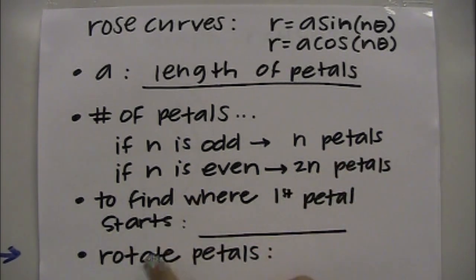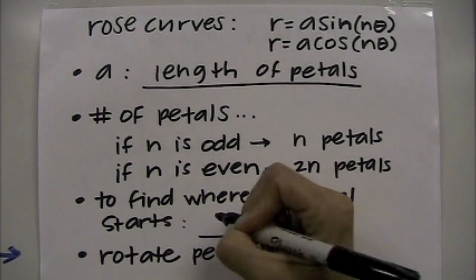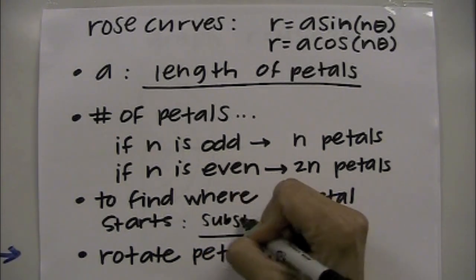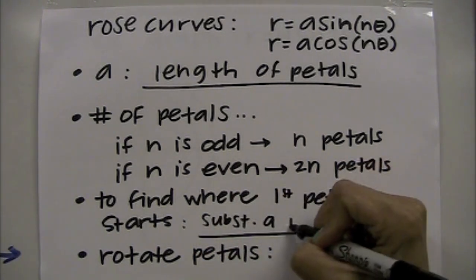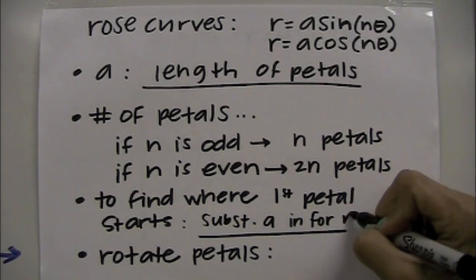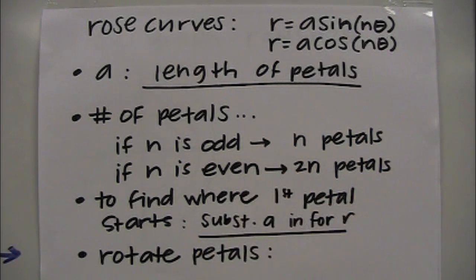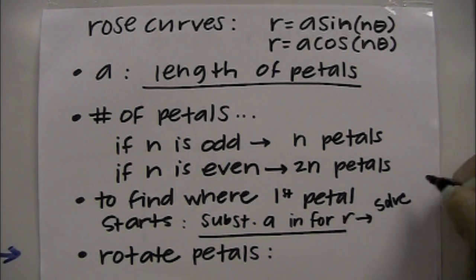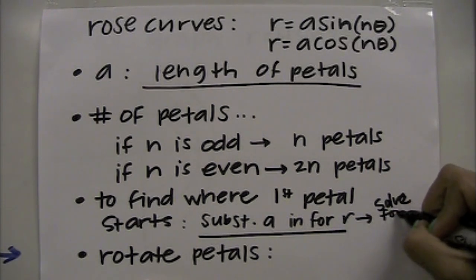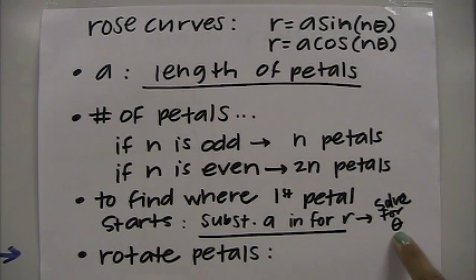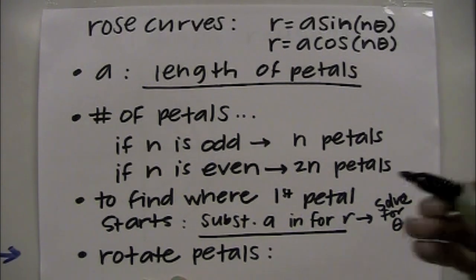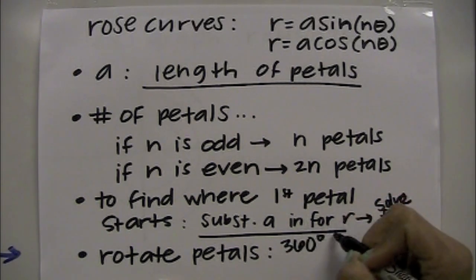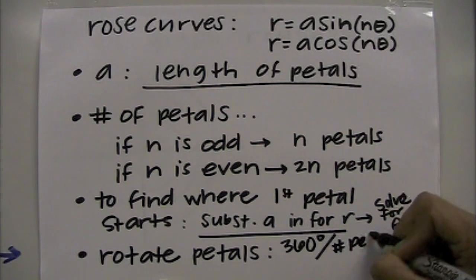To find where the first petal starts, substitute a in for r, then solve for θ. The angle you get tells you where the first petal starts. Finally, to find how far to rotate each petal, take 360 degrees and divide by the number of petals you've already determined.